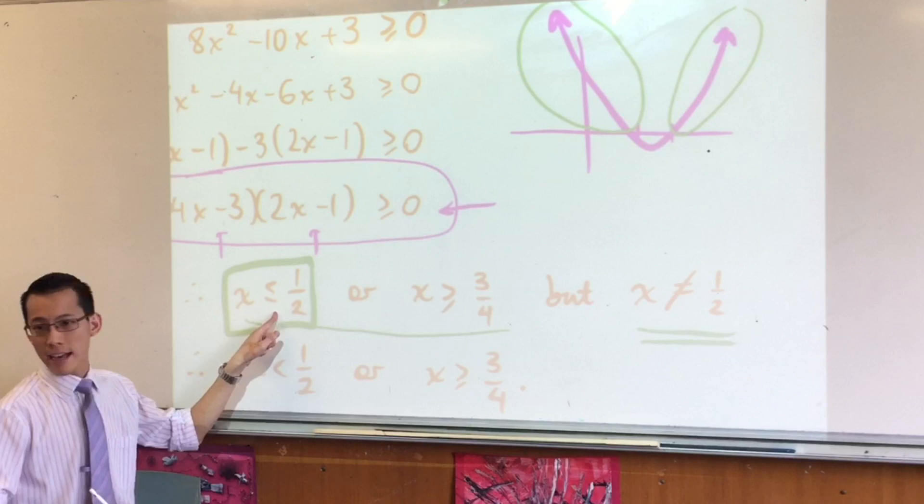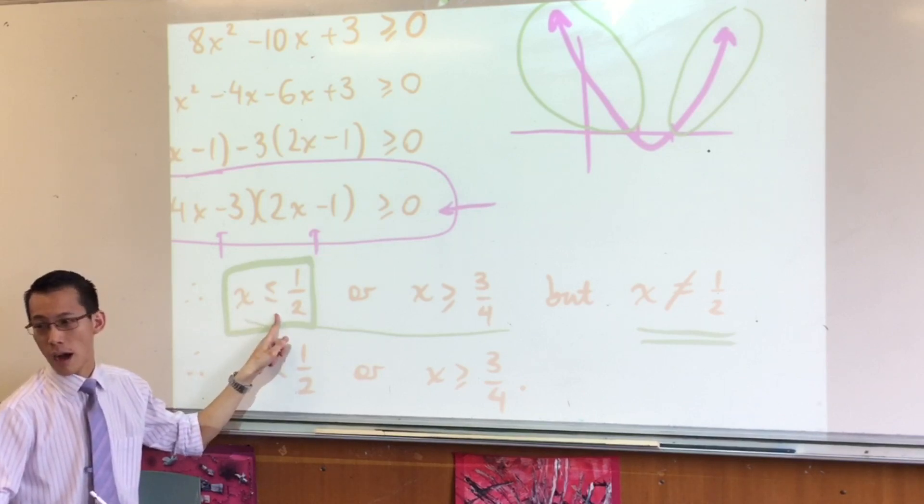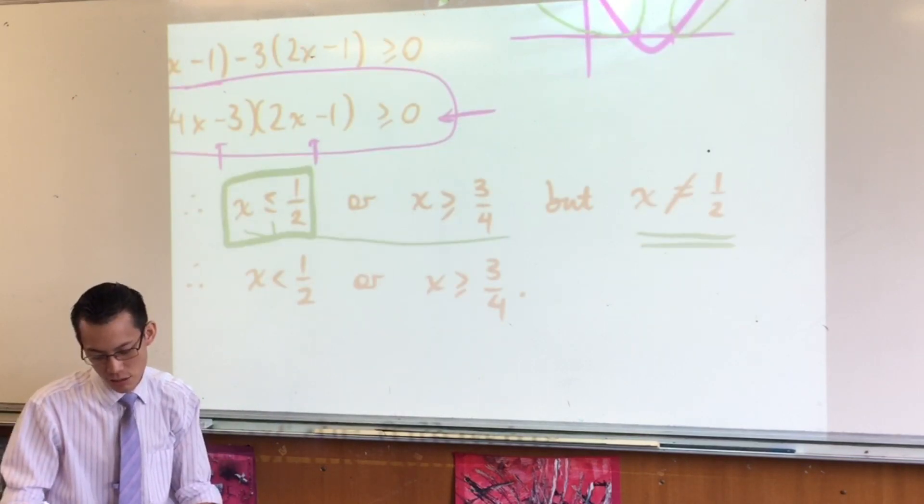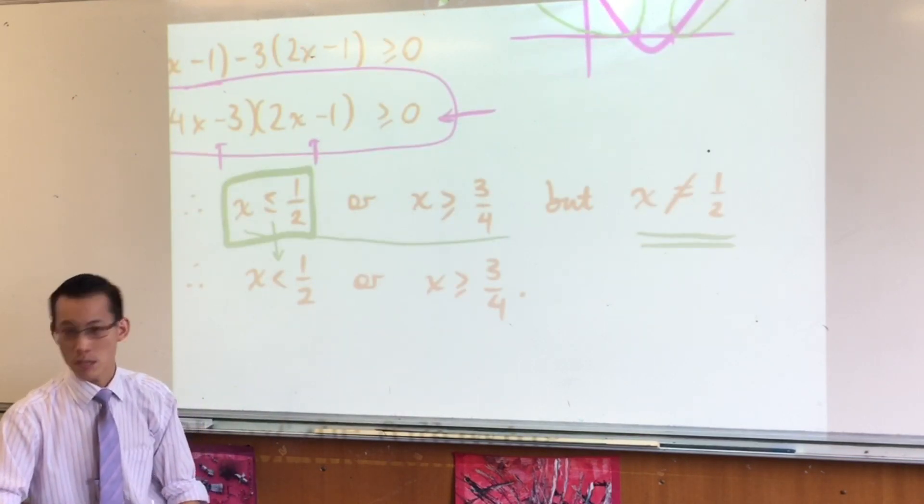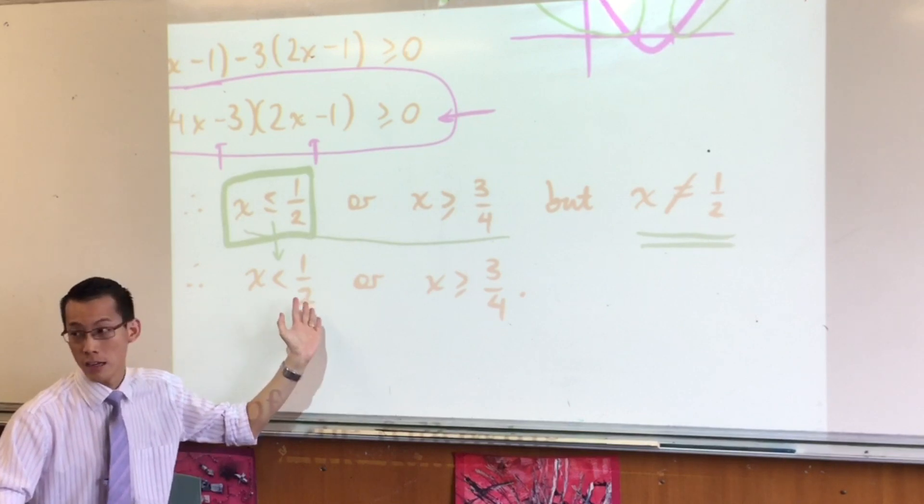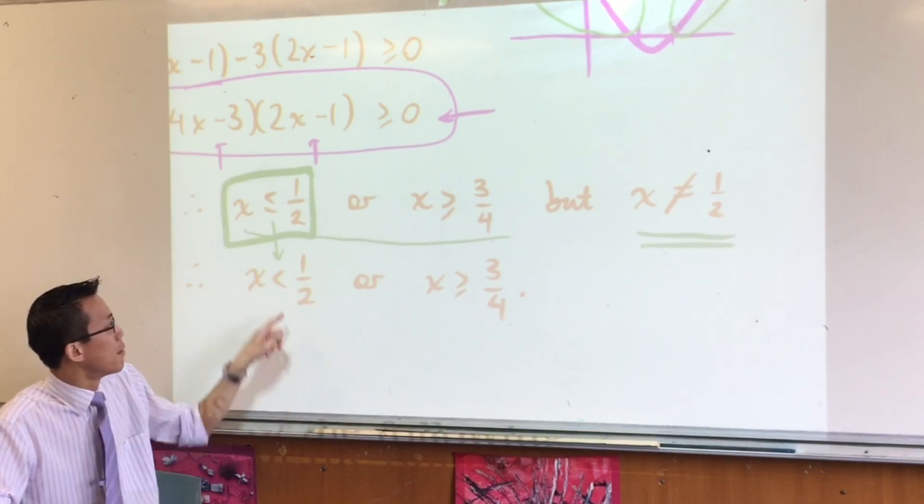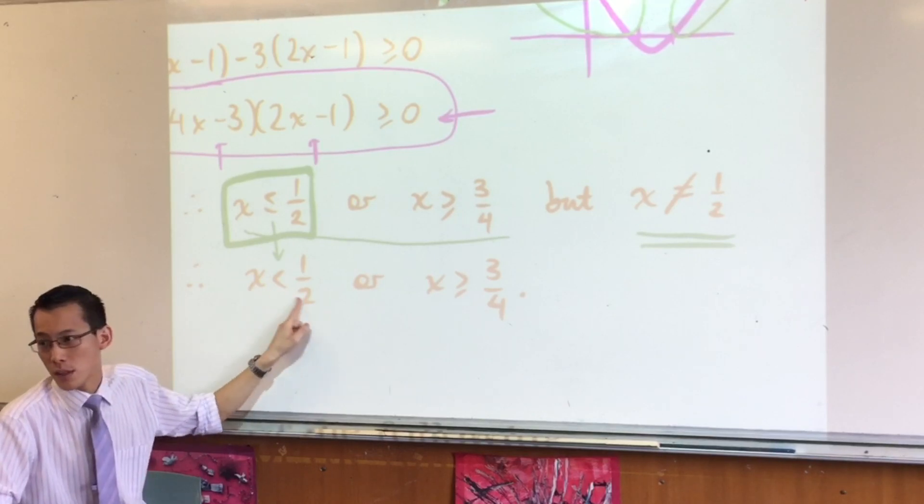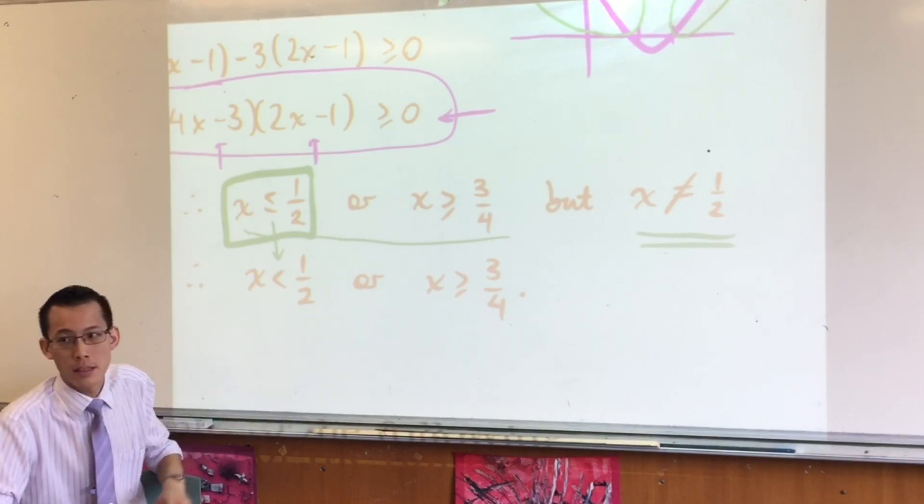So I was like, oh yeah, x can be less than or equal to a half, except I've got to take out that boundary. So that's why there's a subtle change, which students often miss when they solve it through this method. This method is fine. It works quite nicely, actually. But you've got to eliminate this.